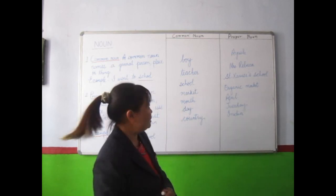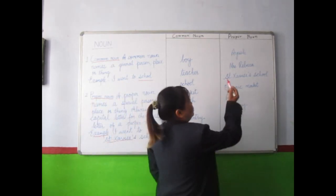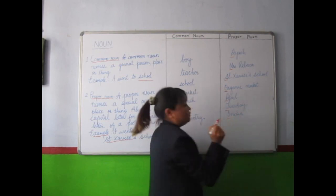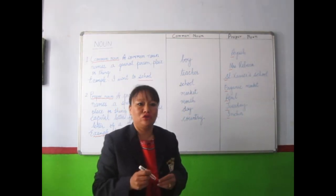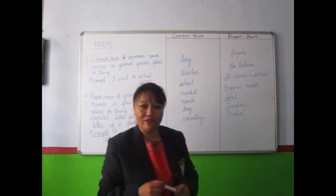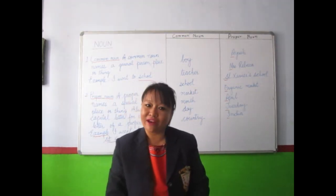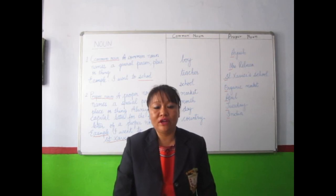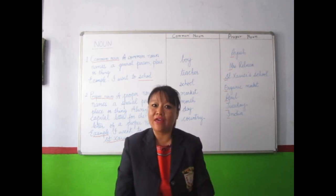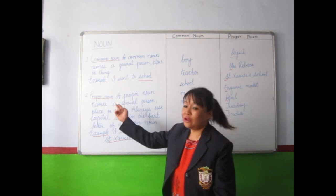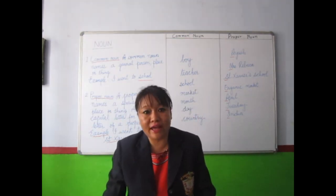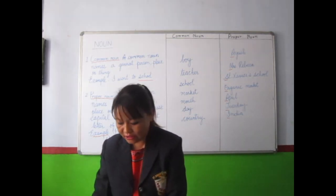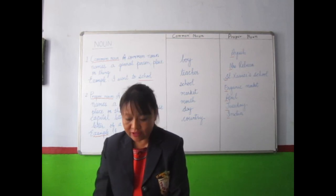My dear children, do not forget — remember you should always use a capital letter in proper noun. The first letter of a proper noun should be written in capital letter. So here I end my class. I am sure you have understood the topic. There are five types of noun but we learnt only two types. They are common noun and proper noun. There are many examples given in your book — you can refer to page numbers 17, 18, 19 and 20.